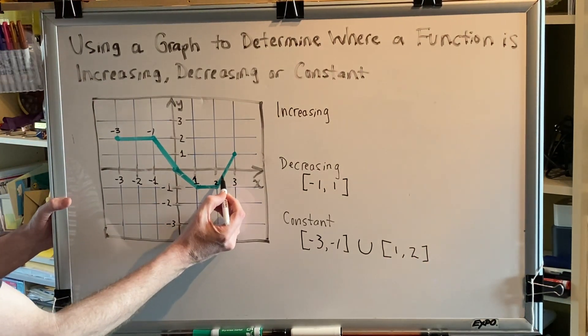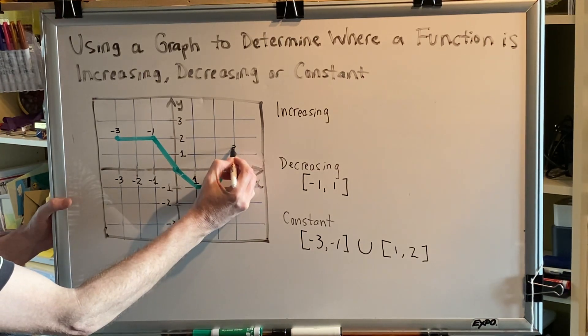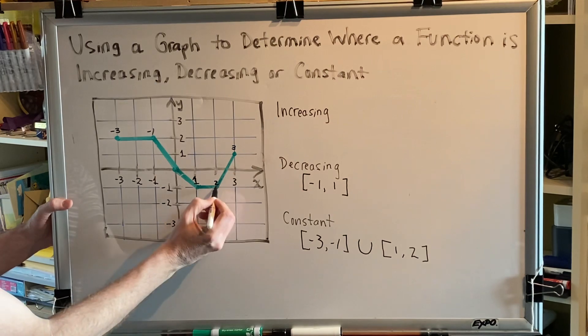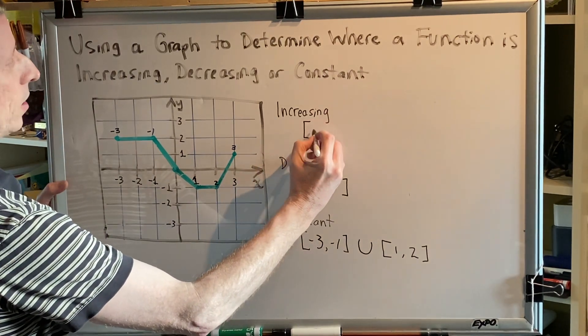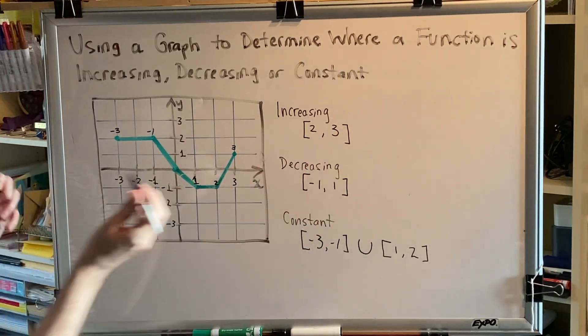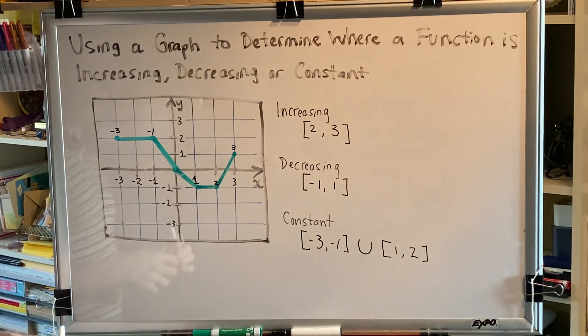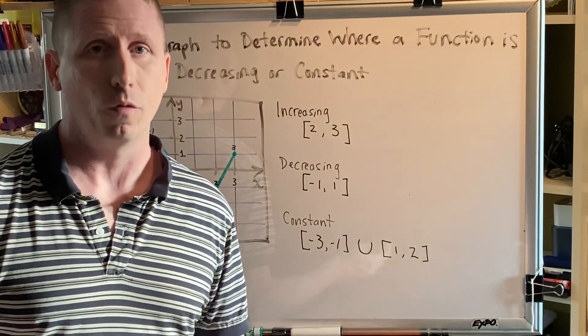Finally, as we leave this point we find that we are increasing until the end, and the final point has an x-coordinate of three. So we are going from two to three increasing, which we represent as bracket two comma three bracket. These are the intervals where we are increasing, decreasing, and constant for this graph.